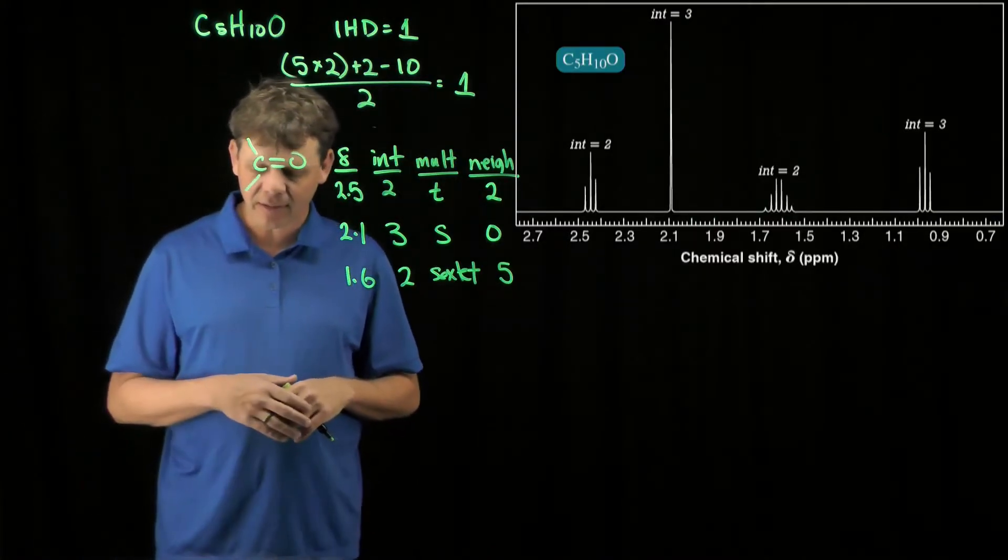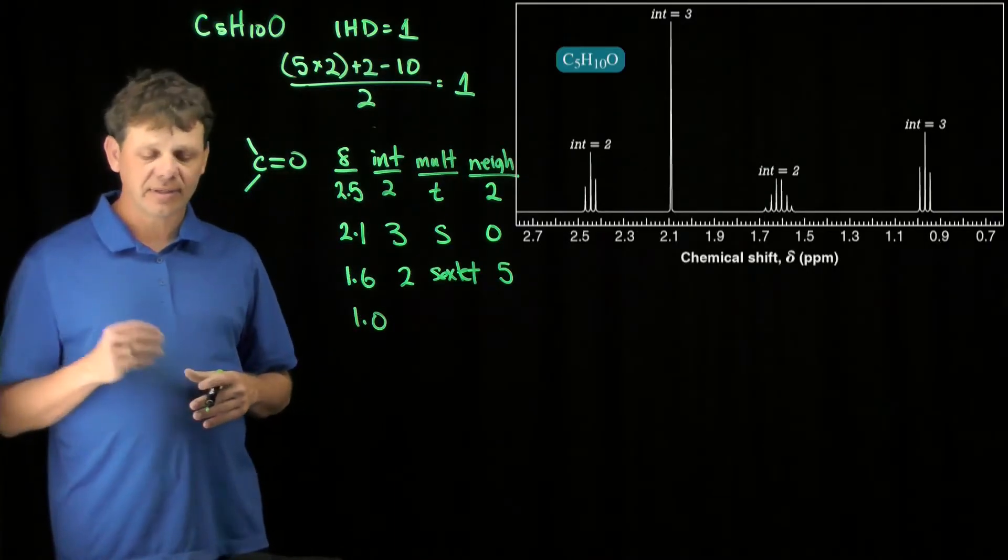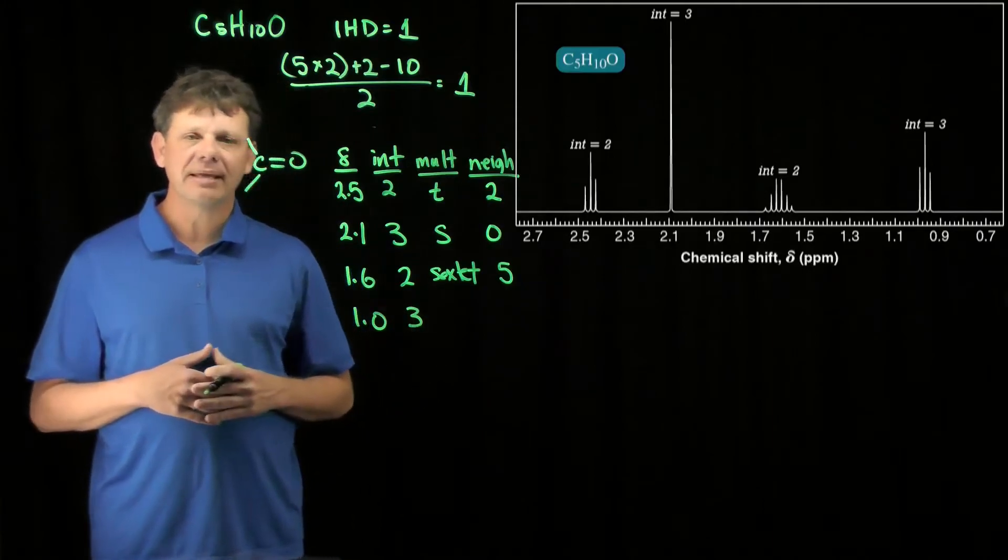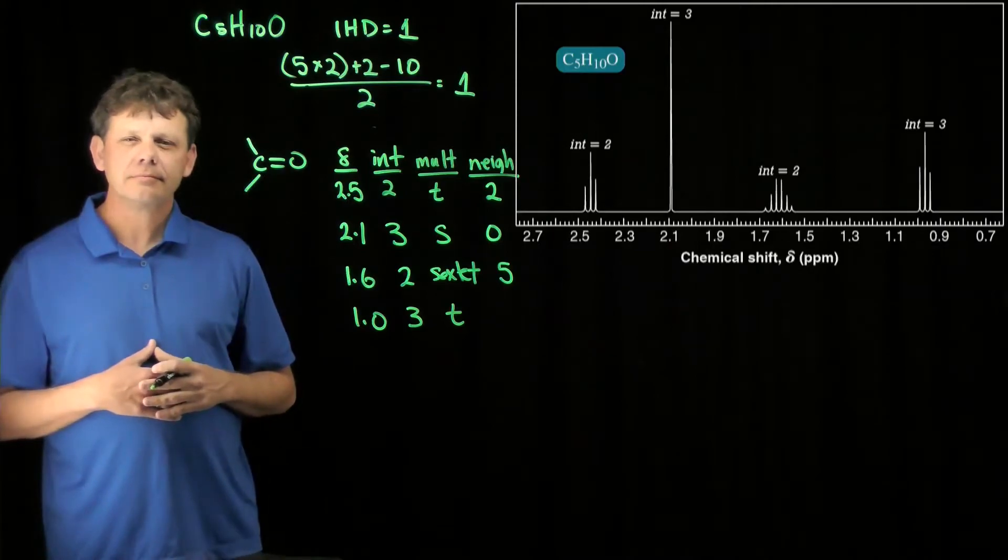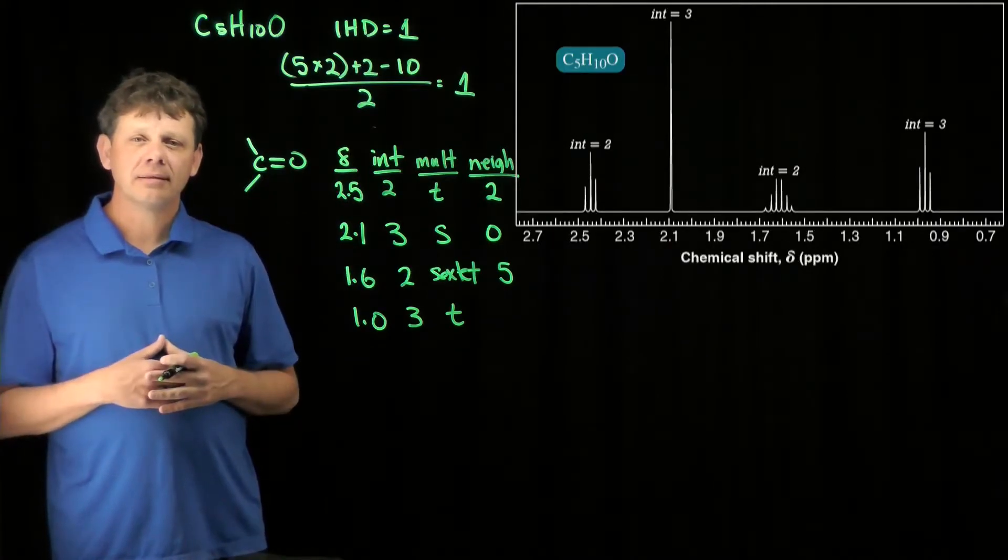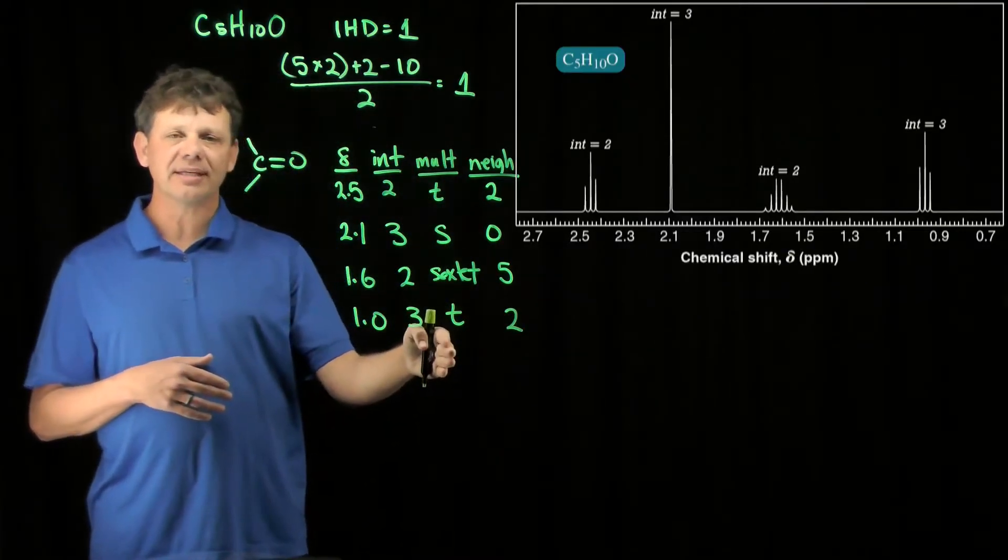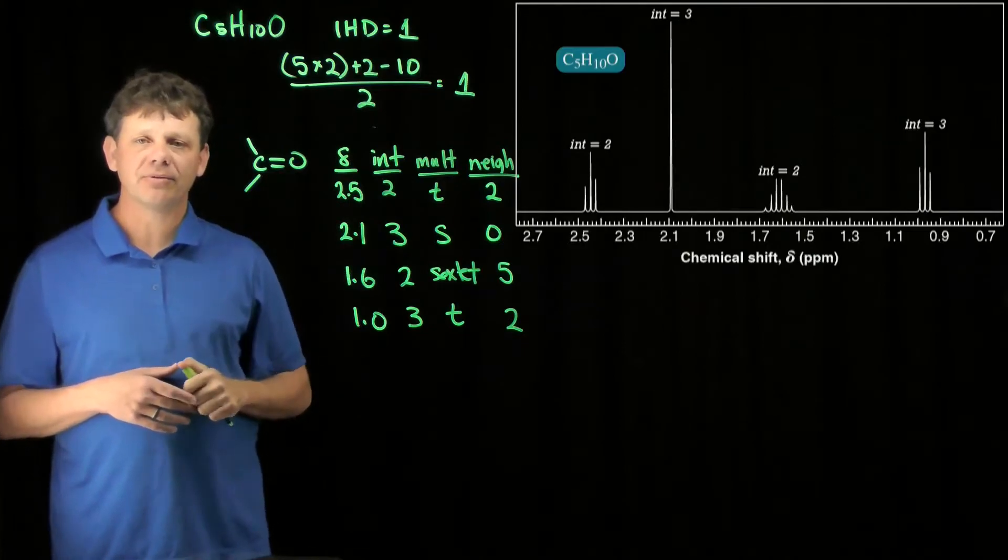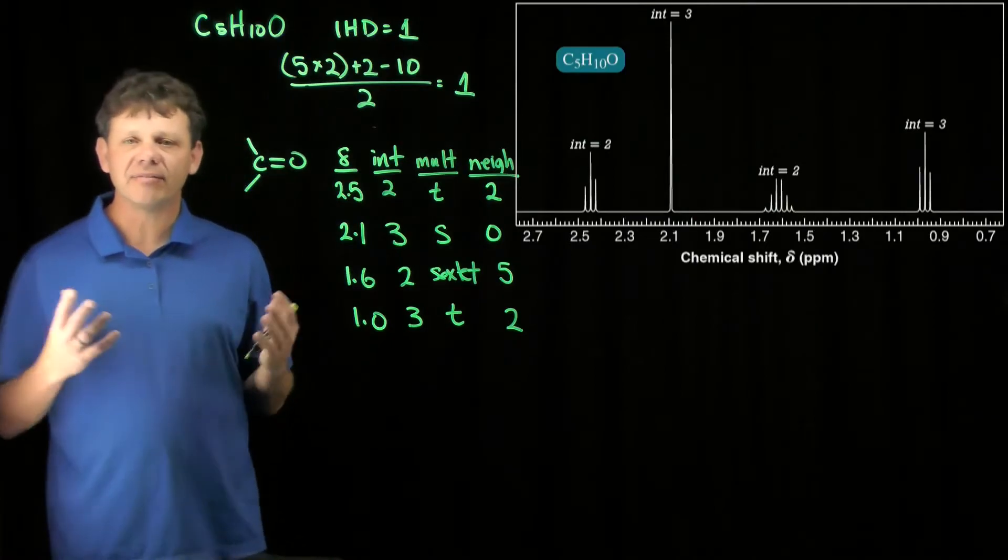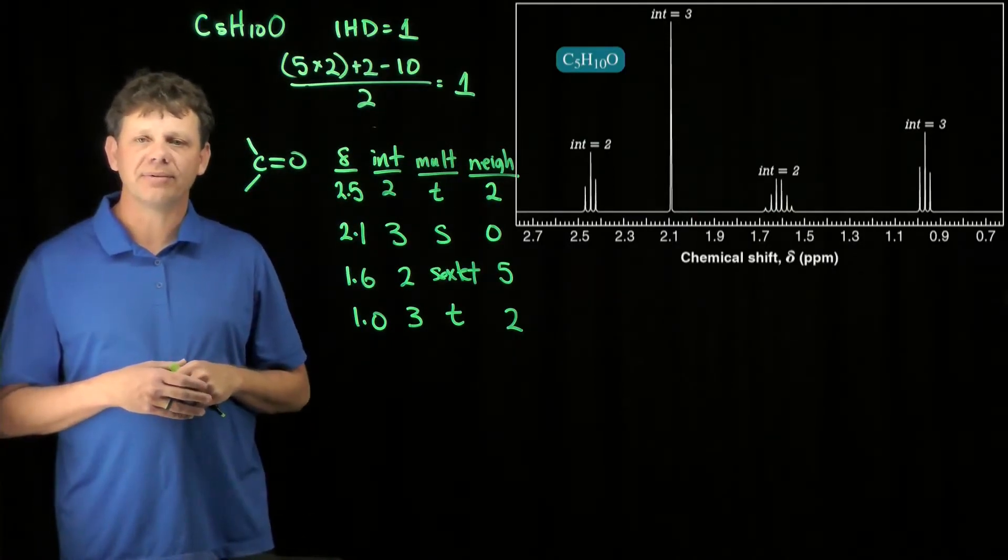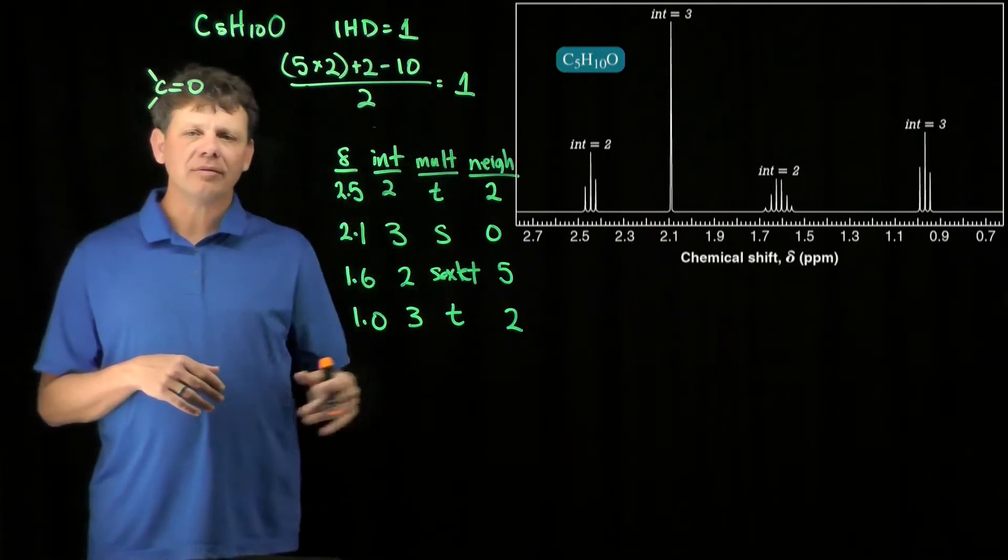The last signal that we'll look at is around one. It is integrating to three, so three hydrogens make that signal. It is a triplet. As a triplet means there are two neighbors. We can take the multiplicity and subtract one to know how many hydrogens neighbor the three hydrogens that give the chemical shift of 1.0.